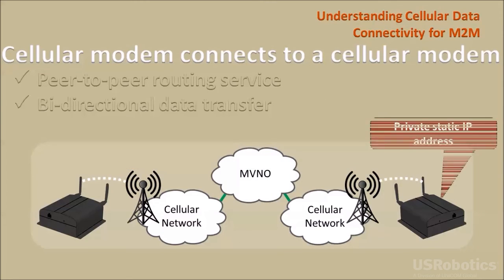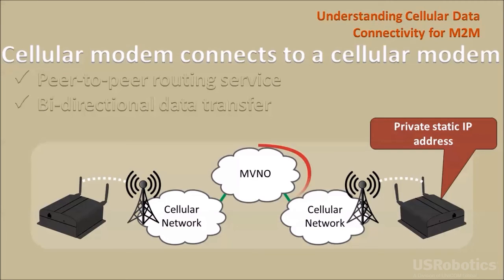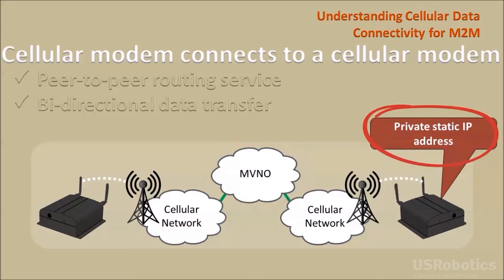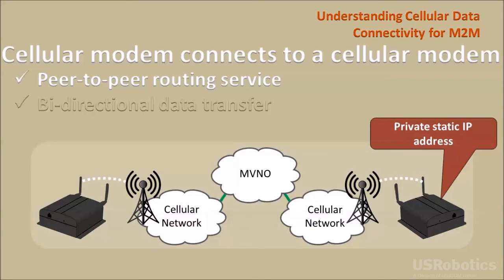Here is a modem-to-modem solution that does not use a public IP address. A cellular service provider such as an MVNO that offers a private network can provision the destination modem with a private static IP address. To allow the originating modem to reach the destination IP address, the cellular service provider must also support peer-to-peer routing within their network. Once the connection is made, data can transfer across the private connection in either direction.